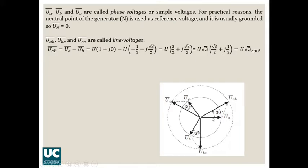So if we calculate the cosine and the sine of that angle, minus 120 degrees, we will get to this direction represented by this phasor. The result is that line voltage UAB has U multiplied by square root of 3 as absolute value, and its angle is 30 degrees. Here you have the value of the line voltage UAB.